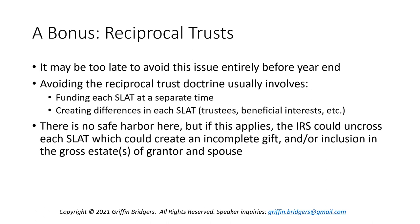There are a couple of bonus issues to mention. One is the reciprocal trust doctrine. It may be too late to avoid this issue entirely if each spouse wants to set up a SLAT for the other before year end. To avoid the reciprocal trust doctrine, the lowest-hanging fruit is to fund each SLAT at a separate time — preferably in different years — and to create enough differences in each SLAT that the IRS doesn't consider each spouse to be in the same economic situation before and after the creation of each SLAT. There's no safe harbor; it's more facts and circumstances. In the worst case, if the reciprocal trust doctrine applies, the IRS could uncross each SLAT for gift or estate tax purposes, potentially causing estate inclusion or an incomplete gift, which would deny use of the grantor's estate and gift tax exclusion.